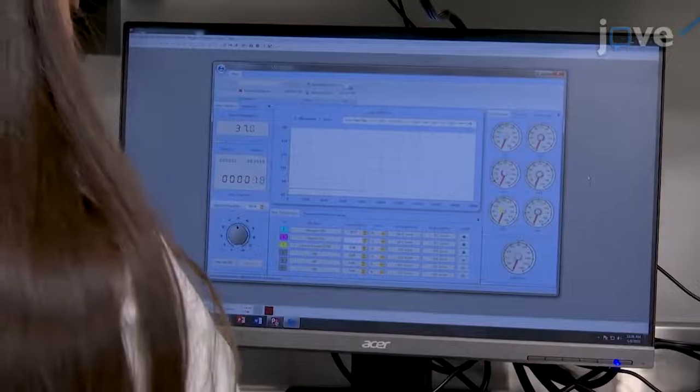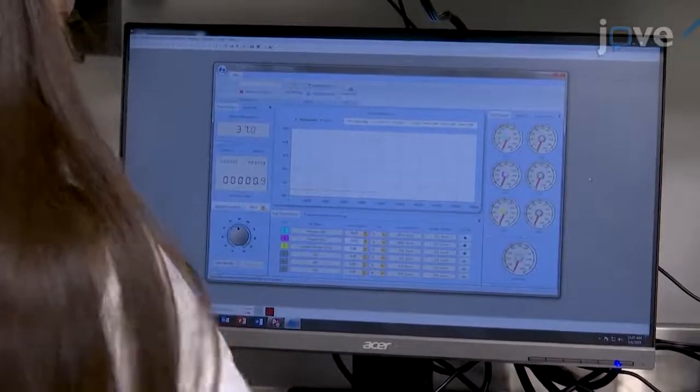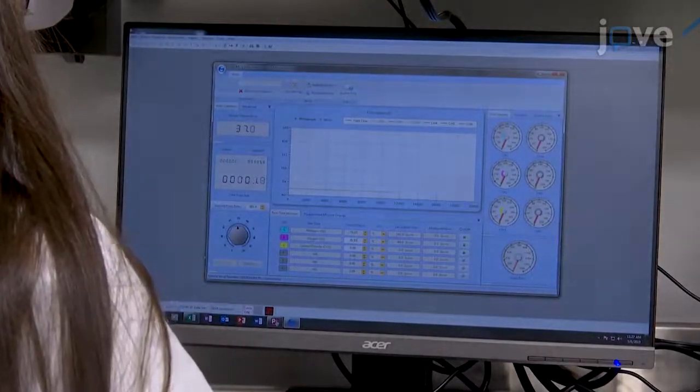To calibrate the metabolic analyzer, in the gas mixer program, set the gas mixer to 20.93% oxygen and 79.07% nitrogen.